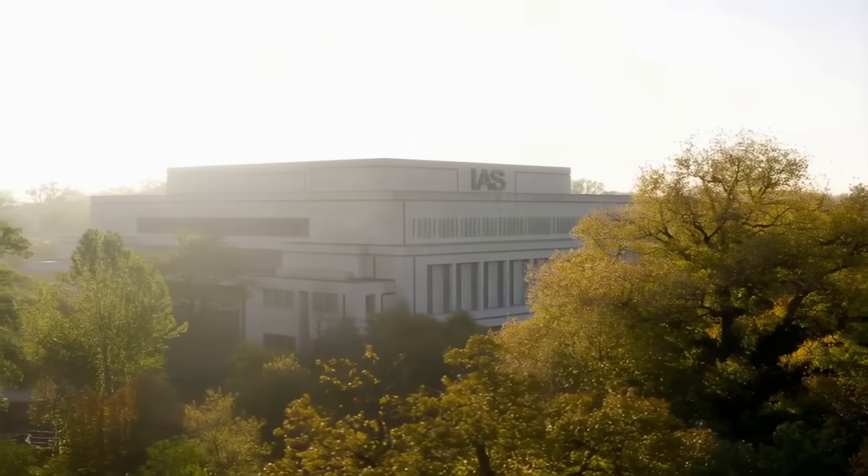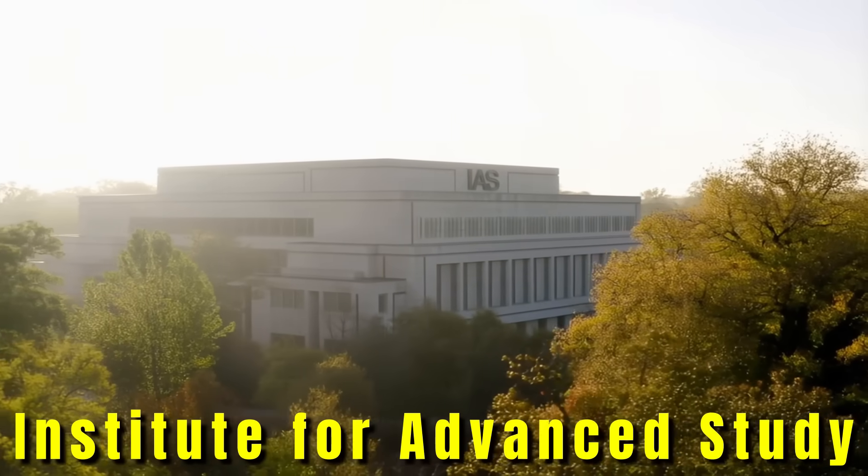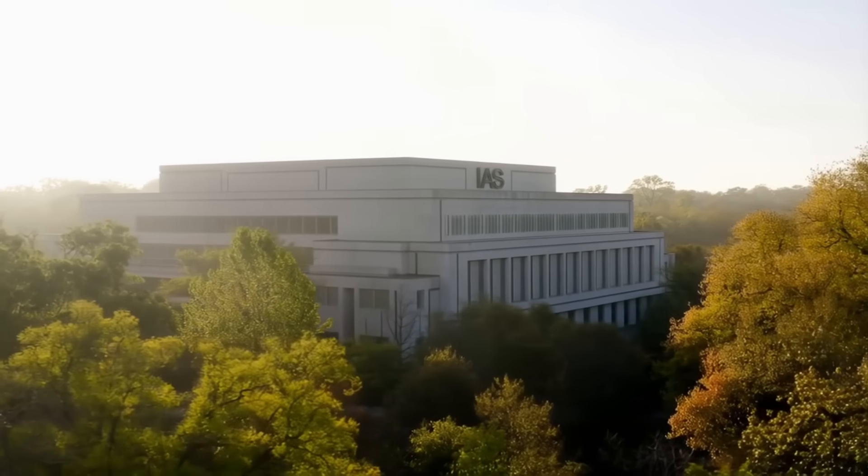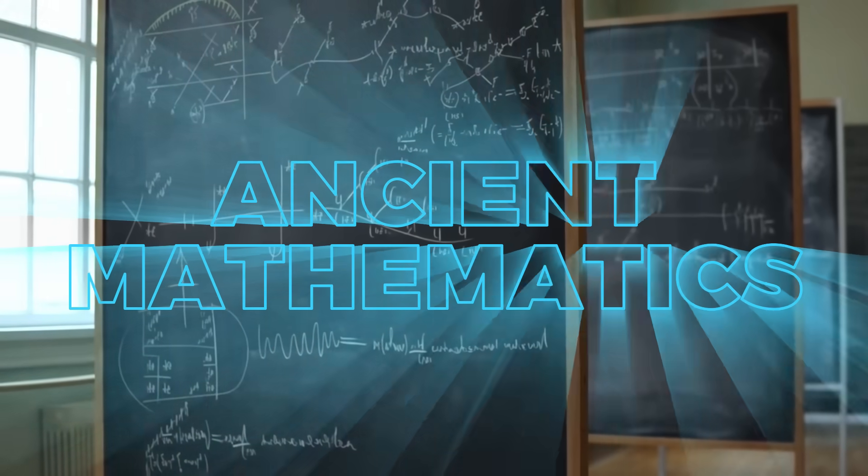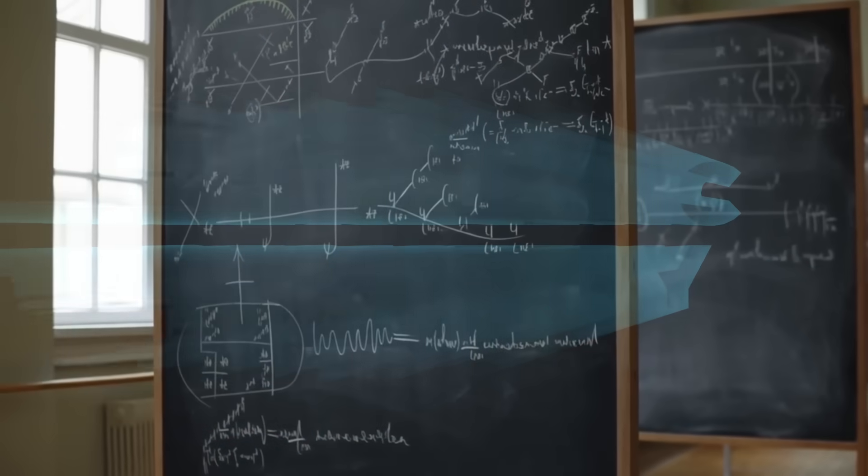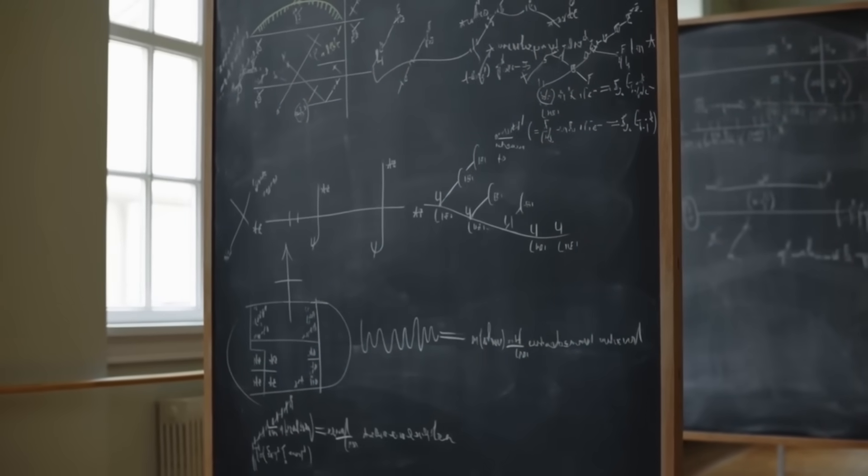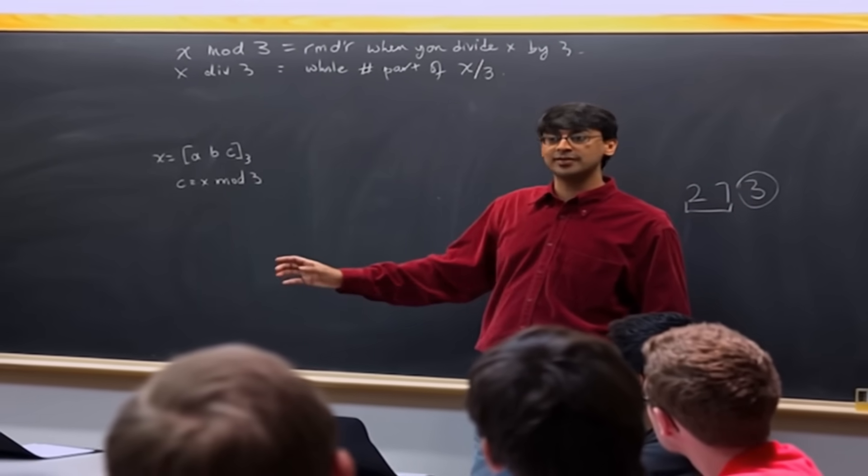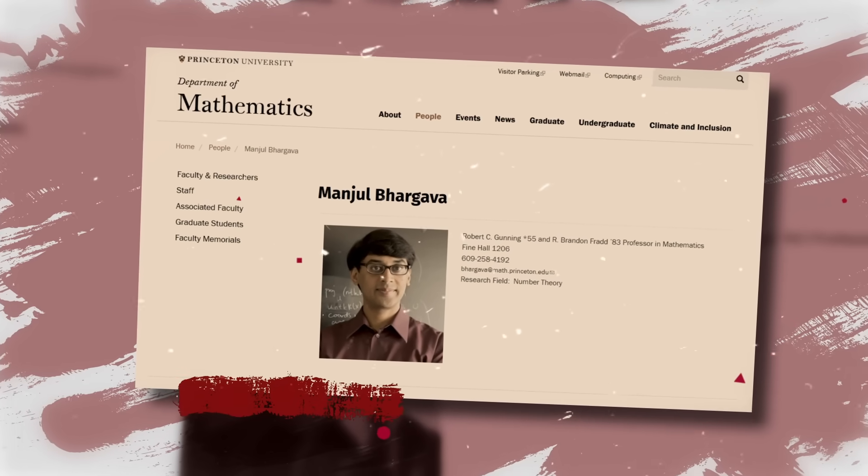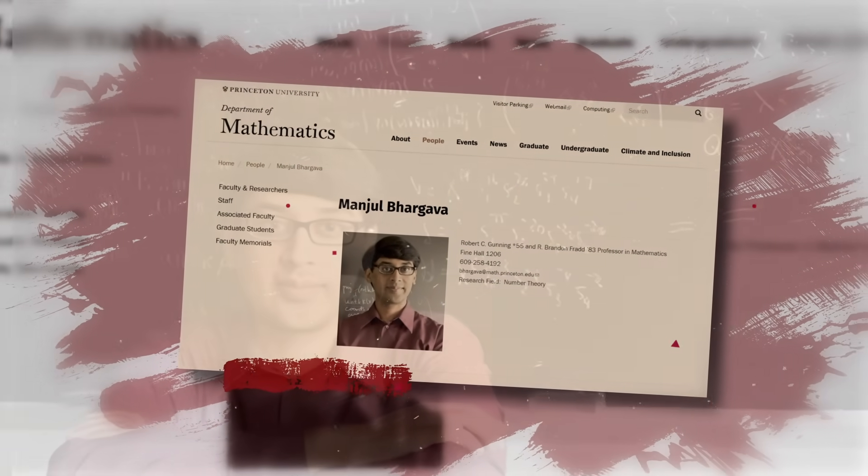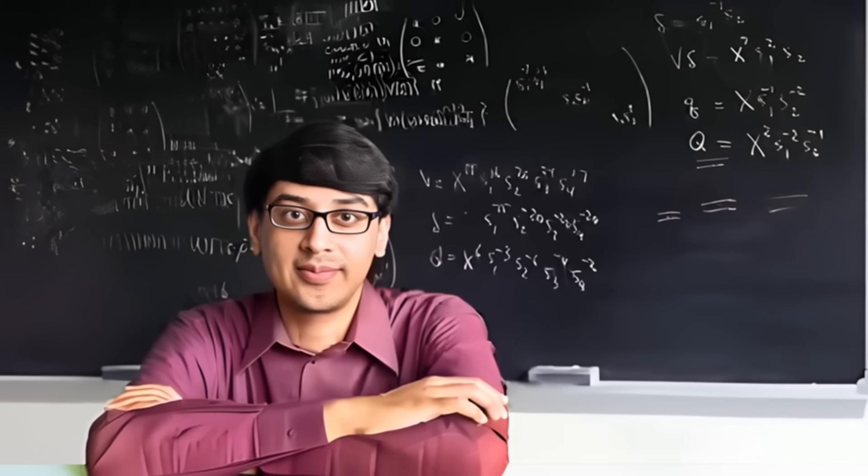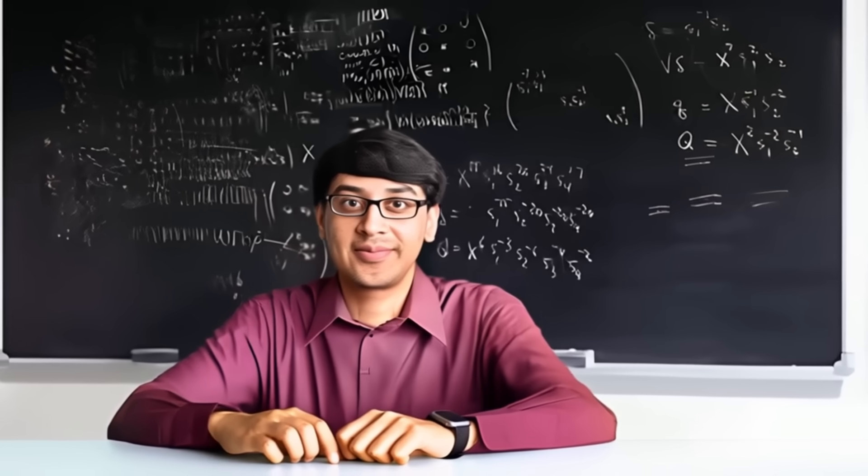Fresh out of Princeton, Manjul enters the Institute for Advanced Study, Einstein's old intellectual playground, where creativity is the currency and impossibly difficult ideas are the norm. Here, he continues exploring ancient mathematical structures, modern algebra, and the hidden arithmetic geometry that links them together. After time at the IAS and visiting positions at Harvard, he returns to Princeton. And the university does something extraordinary. In 2003, they promote him to full professor, at just 28 years old. In mathematics, where lifetimes are spent chasing proofs, reaching full professorship this young is almost unthinkable.